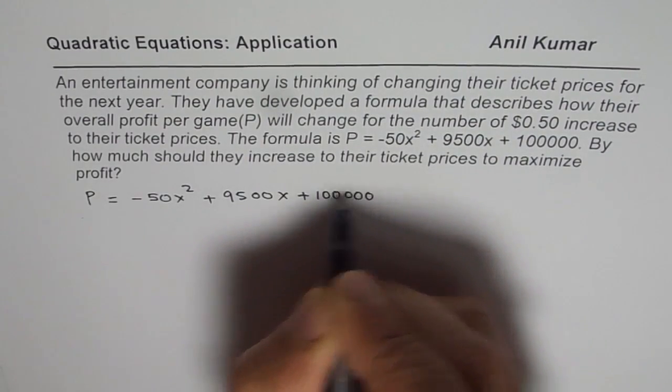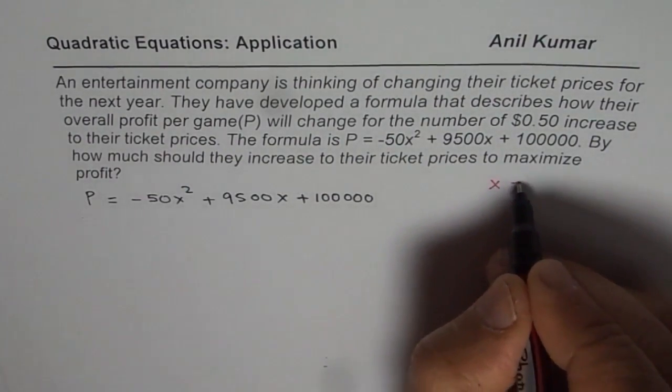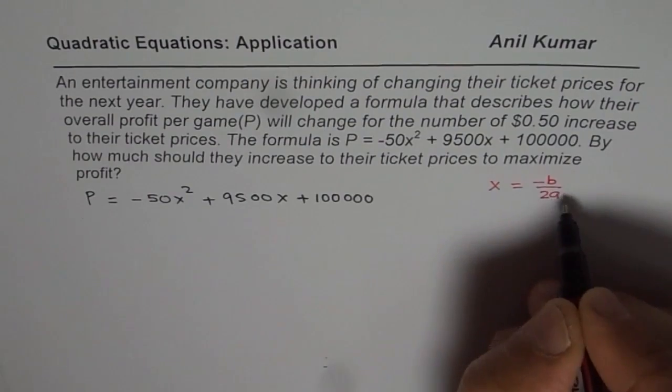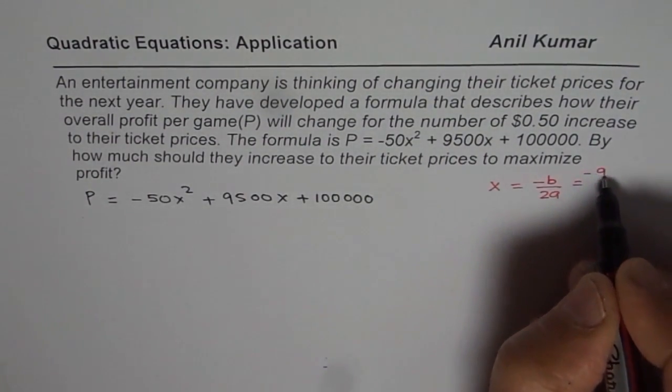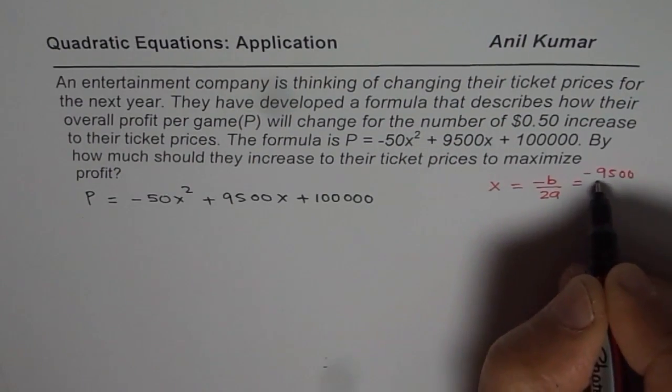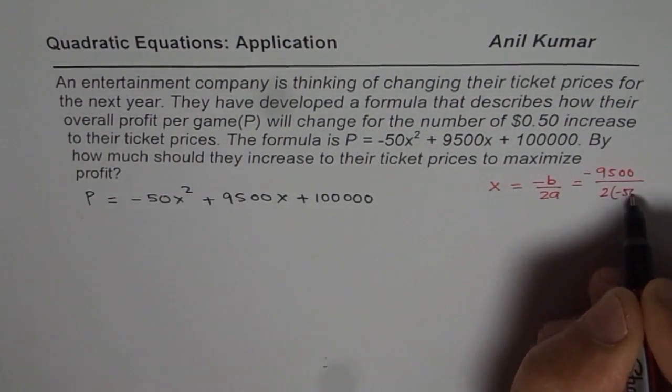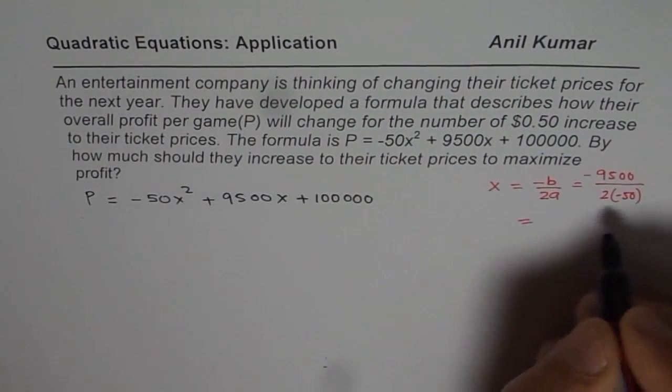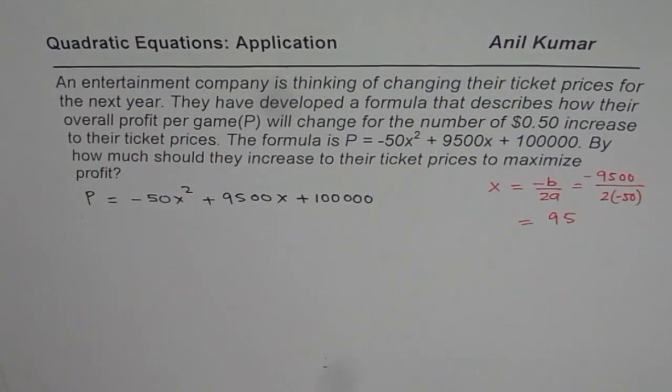Now sometimes this question could be an objective type question. In that case the axis is always at minus b by 2a. So we expect the answer to be minus 9500 divided by 2 times minus 50, which is 95.